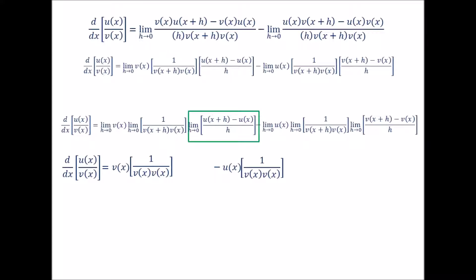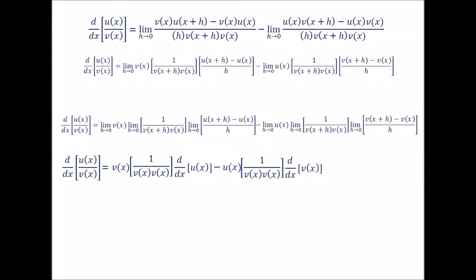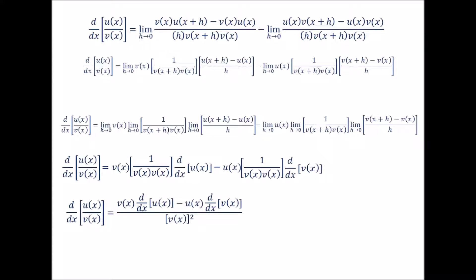Lastly, seeing that the limit of u of x plus h minus u of x over h, and the limit of v of x plus h minus v of x over h are of the derivative form, we get the derivative of u of x and the derivative of v of x plugged in accordingly. Seeing that 1 over v of x times v of x is simply 1 over v of x squared and factoring it out, we arrive at the result. Simplifying and rewriting in prime notation, we get the quantity u of x over v of x, prime, equal to v of x times u prime of x minus u of x times v prime of x, all over v of x squared.